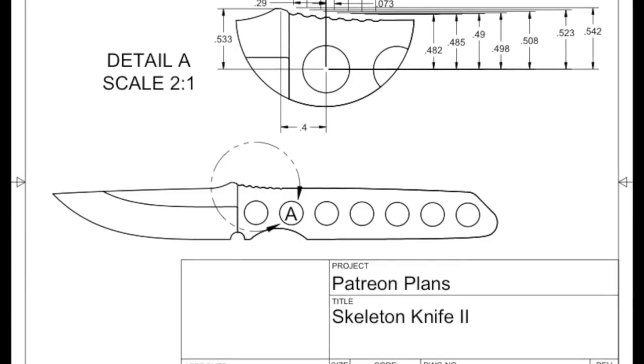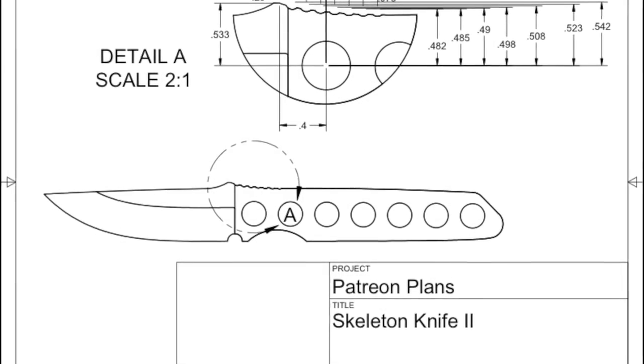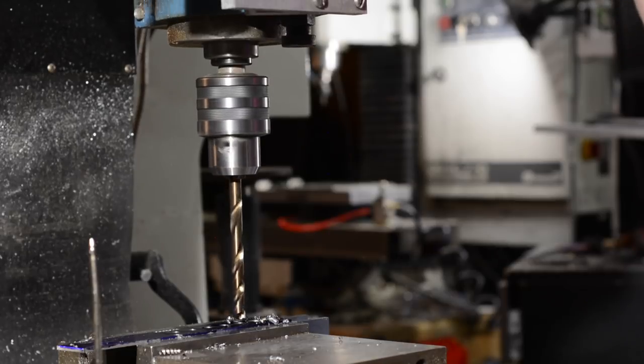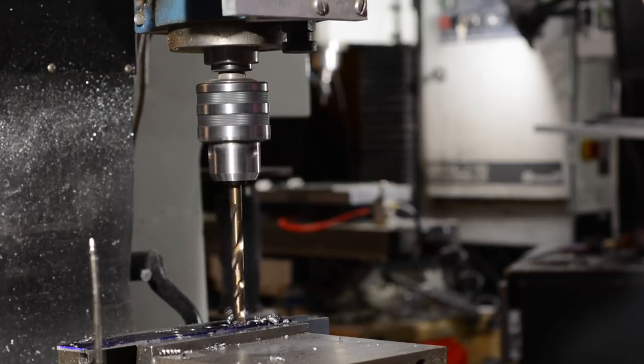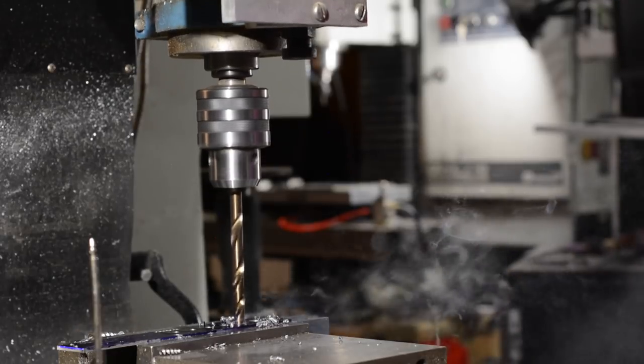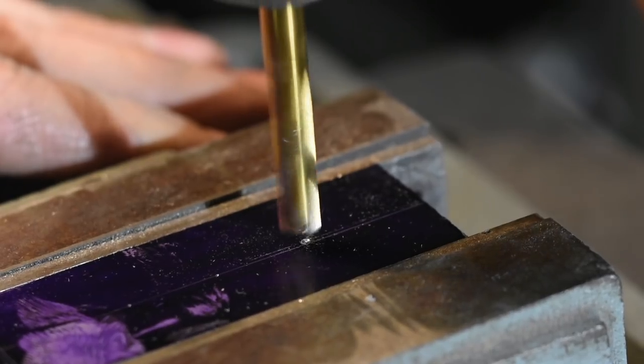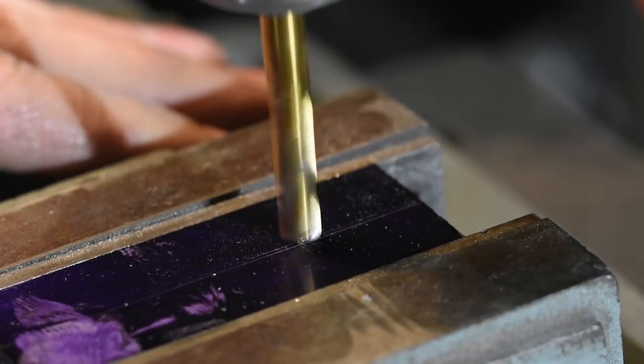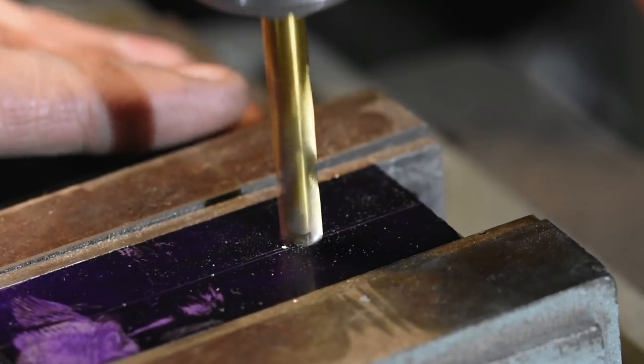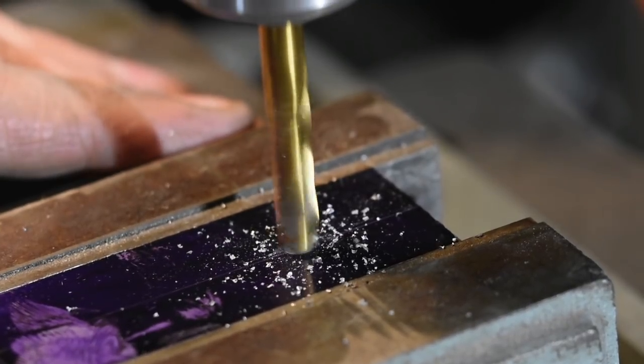This project has a ton of drilling. I'll show a variety of methods so that whether you have a $10,000 mill with a DRO or a $79 benchtop drill press, you'll have a method of getting your holes drilled in the right place. Are there other approaches to drilling than what we'll show here? Of course, but here are a couple of approaches that work.